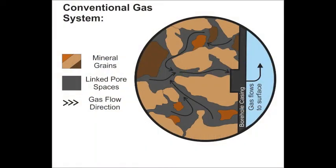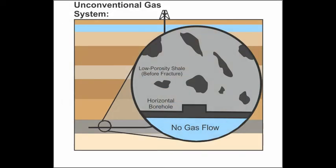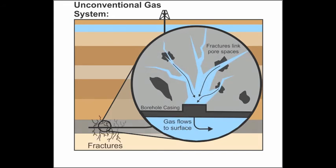So why do we have to hydraulically fracture shales? In a conventional gas system, the gas has migrated out of the shale and is now in a more porous and permeable rock, where all the pore spaces are connected, so when you drill down into that rock there will be a natural flow of gas into the well. Whereas in a shale, although there are lots of pores, those pores aren't connected, so there's no natural flow within the rock. To get the gas out, you have to drill down into it and inject fluids at high pressure to create a pathway of small fractures, which connect the pores containing the gas and allow it to flow into the well and back up to the surface.